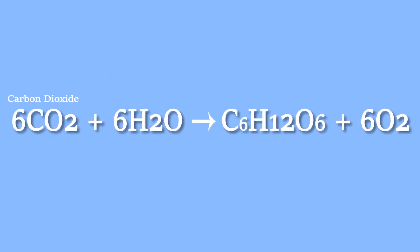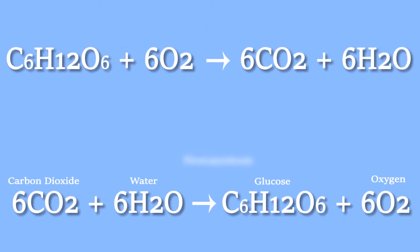The chemical reaction for photosynthesis is: carbon dioxide plus water yields glucose, or sugar, and oxygen. Does this look like it relates to something else you've learned? If you flip this reaction, you have cellular respiration. The products of one are the reactants of the other.